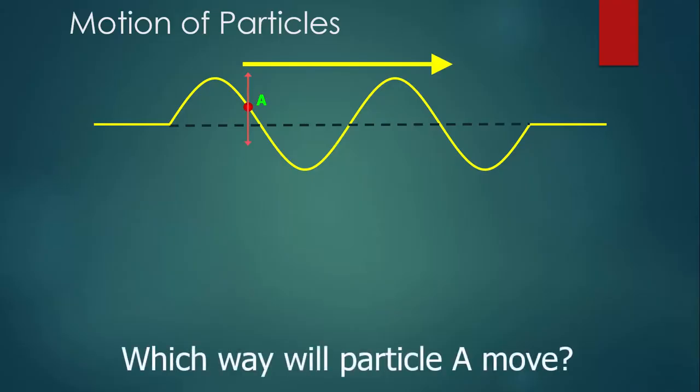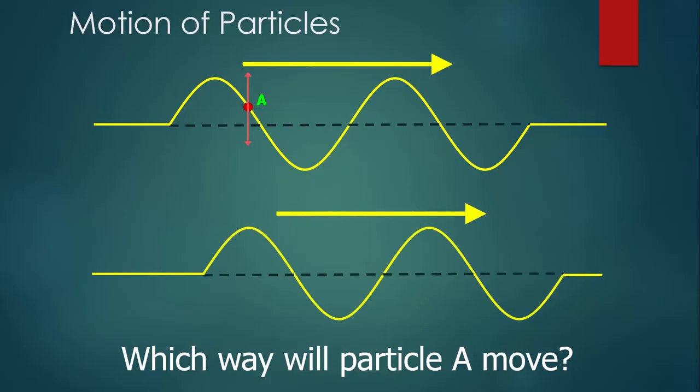We want to predict which way particle A will move in the next moment of time. A moment later, the wave will have shifted slightly to the right. Now remember particle A can only move up and down so it still has to be along this red dotted line. It should be obvious where particle A is now. It's at the top of this crest. Which way did it move to be on top of this crest? It moved up.